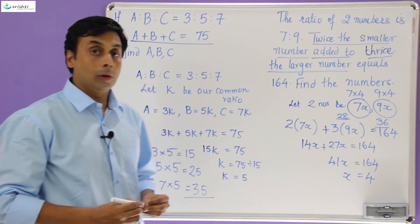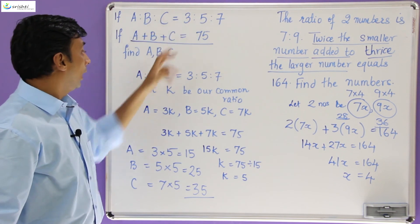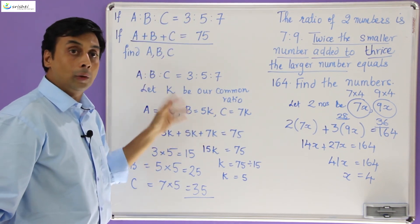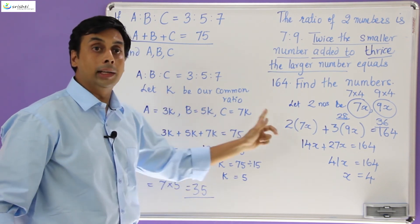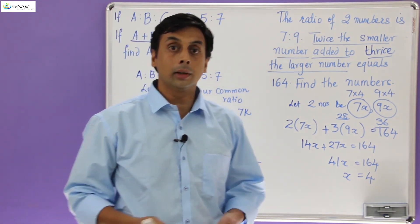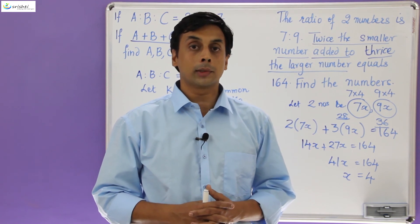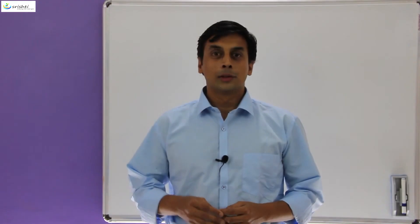So I hope that from these two questions you understood that common ratio has two parts: first, from the ratio you frame the numbers in terms of the common ratio; and second, you use an additional equation to find that common ratio, after which you can find the actual numbers. I do hope the concept of common ratio is now clear. Do like, share, and subscribe to my channel and stay connected for more interesting videos. Goodbye and thank you.